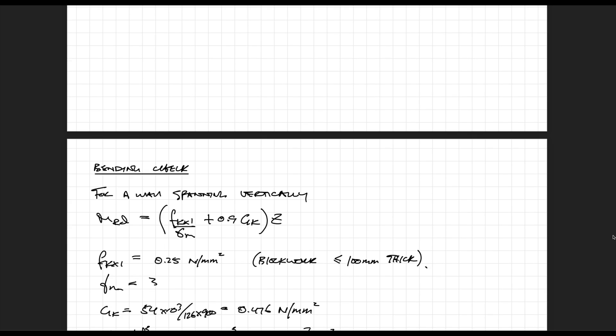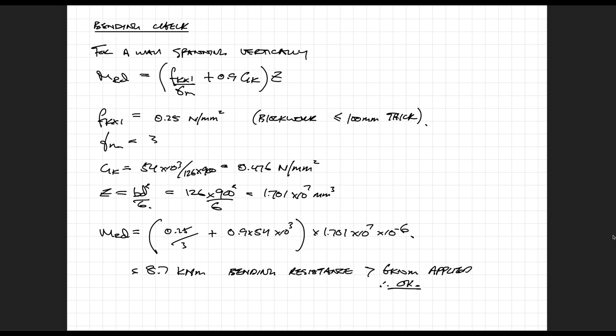Now moving on to the bending check. For this example the wall is spanning vertically. When a wall is spanning vertically to check the bending moment resistance we need to use this equation. Fkx1 is the characteristic flexural strength of the masonry and this varies depending on what type of masonry you're using. We're using a value of 0.25 N per m² because our blockwork is 100mm thick. Gk is the actual stress due to dead load, and z is the section modulus. The stress is calculated the same way as in the shear check, and the section modulus is calculated using bd² over 6, where b is 126 and d is 900mm. Plugging all these numbers into the bending moment resistance equation, we get a resistance of 8.7 which is greater than the applied which was 6 kN. Therefore our check passes and we don't have to do a separate check on the entire masonry panel, saving us a lot of time.